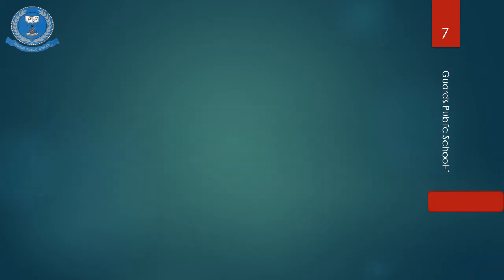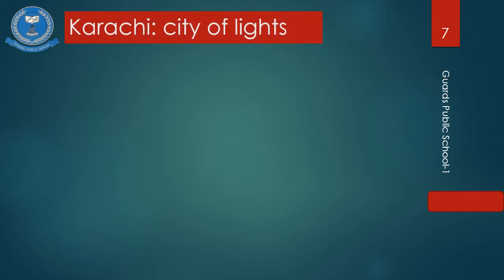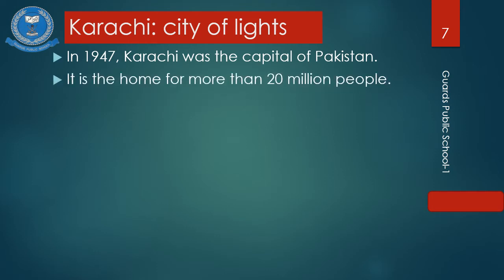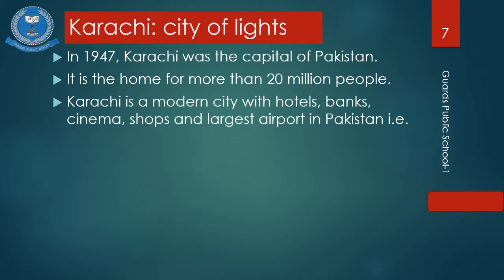Next comes Karachi, known as the city of lights. In 1947, when Pakistan gained independence, Karachi was the capital of Pakistan. It is home to more than 20 million people. Karachi is a modern city with hotels, banks, cinemas, shops, and the largest airport in Pakistan — Jinnah International Airport, which is the biggest airport in Pakistan.